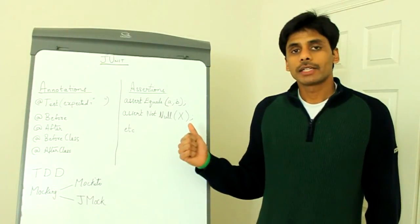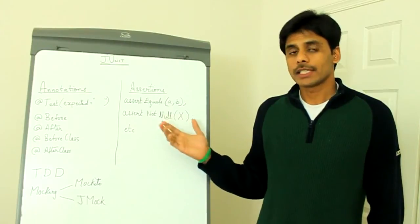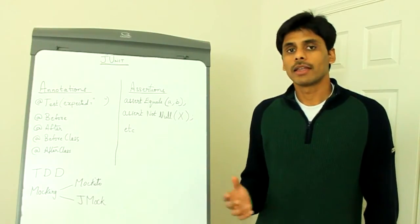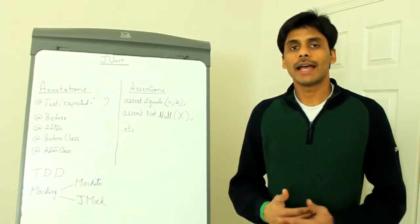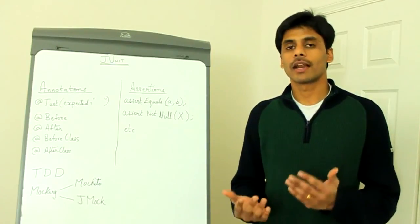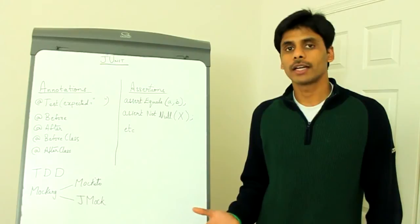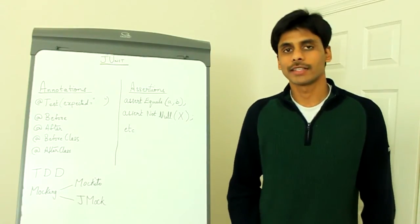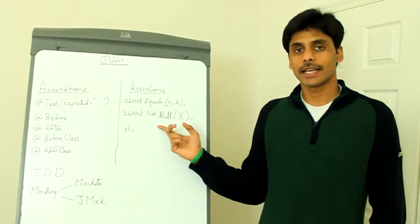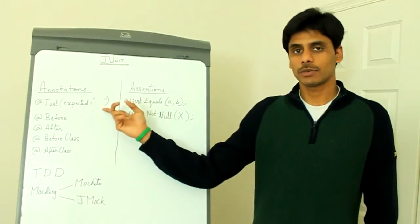And JUnit framework also provides us with assertion methods, various assertion methods using which you can assert for the values that your method returns. So you can assert that the values that you are expecting the method to return and the actual values that the method returns are the same using the various assert methods within your test method.